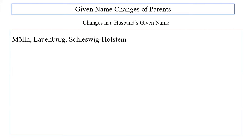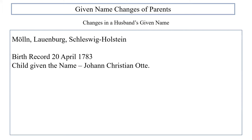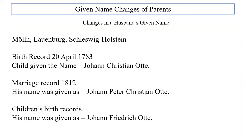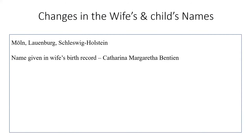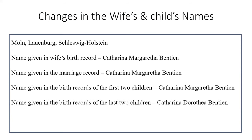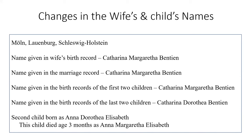Given name changes of parents. In the parish christening record in Moodle-Lawenburg-Schleswig-Holstein, a child was born on 20 April 1783 by the name of Johann Christian Otter. In 1812, at the age of 29, he was married as Johann Peter Christian Otter. In the birth records of his four children, he was recorded as Johann Friedrich Otter. Johann's wife's name shown in her birth record, their marriage record, and in the birth records of her first two children was Caterina Margarita Bentin. But she was listed as Caterina Dorothea Bentin in the birth records of her last two children. Their second child was listed as Anna Dorothea Elizabeth in her birth record, but listed as Anna Margarita Elizabeth three months later in her death record.